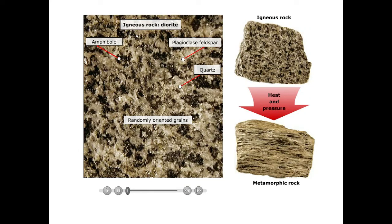Here is another example: an igneous rock diorite consisting of minerals amphibole, plagioclase feldspar, and quartz, randomly oriented — this is the protolith. When subjected to pressure and temperature, this igneous rock forms a metamorphic rock. You can see that the light and dark bands have gotten separated — some light bands have accumulated on one side and some dark bands on another side, showing differentiation occurring when pressure and heat act on the pre-existing rock.